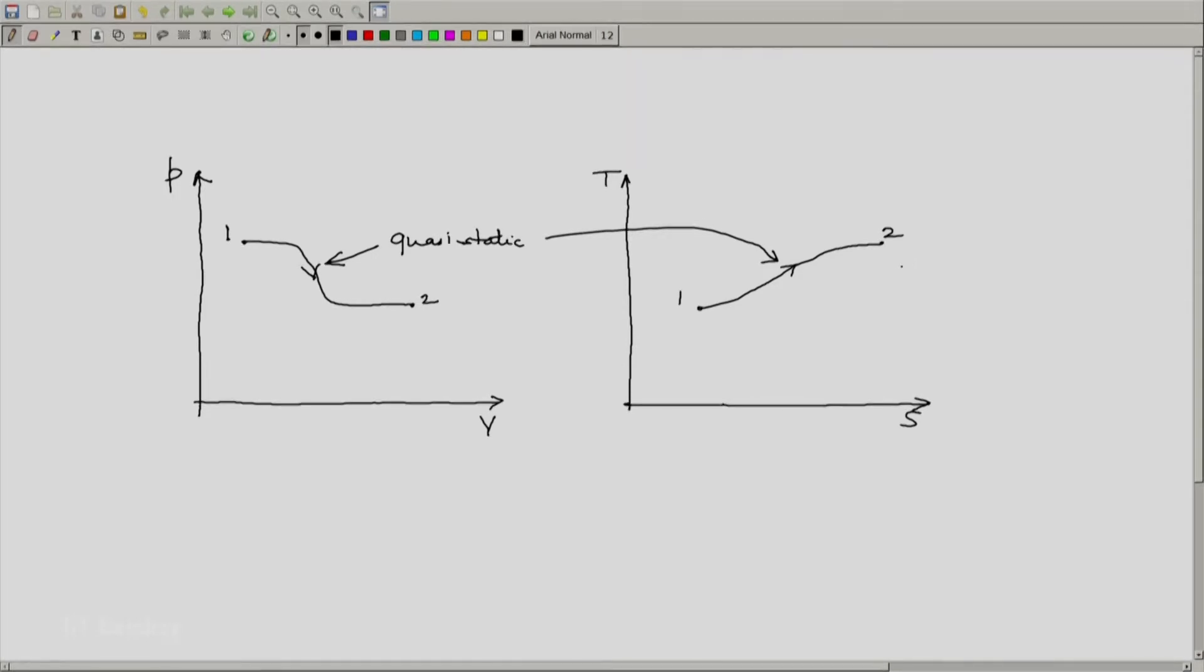So can it be on the TS diagram, and because it is a nicely defined continuous curve, we can determine the area under this curve on the PV diagram. Let me call it APV. Similarly,